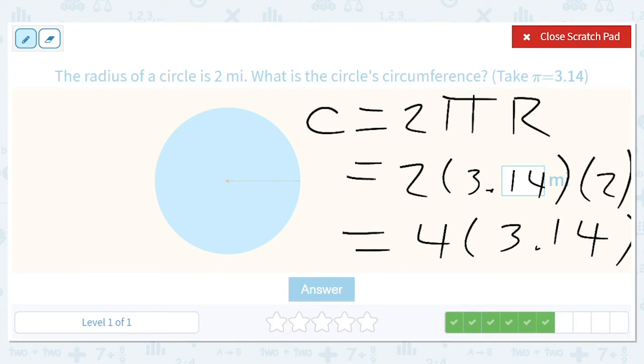I'll write it out. So 3.14 times 4, we've got a 16 here, we've got a 1, we've got a 5, we've got 12.56.